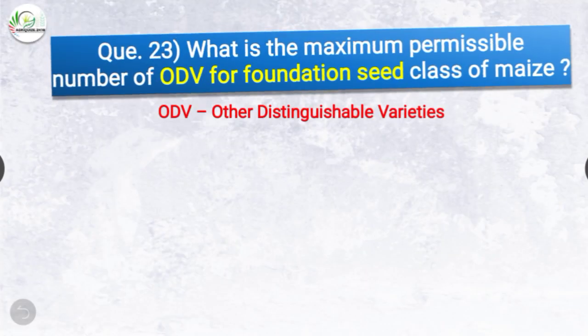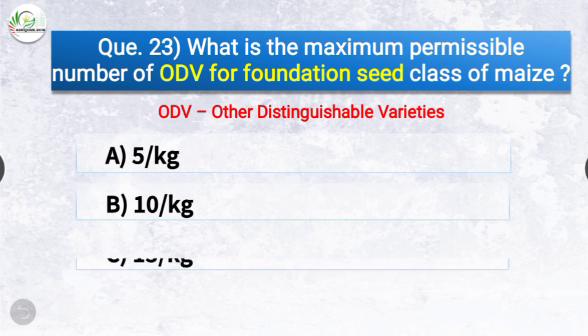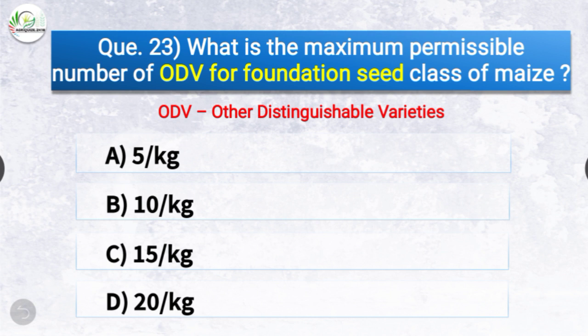Question number twenty-three: What is the maximum permissible number of ODV for foundation seed class of maize? The options are 5 per kg, 10 per kg, 15 per kg, or 20 per kg. The correct answer is option A — 5 per kg. ODV stands for other distinguishable varieties, which is based on kernel color and texture of maize.